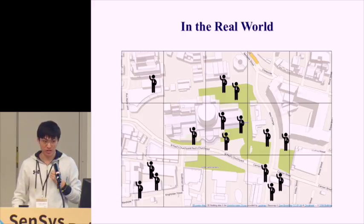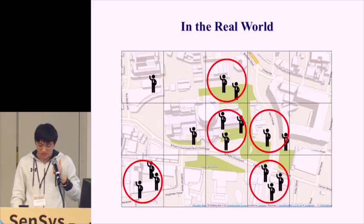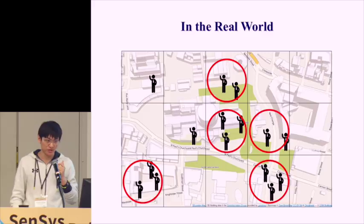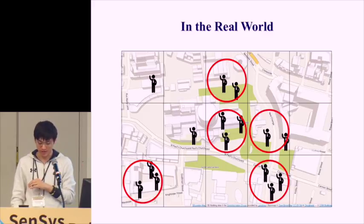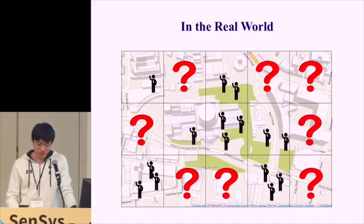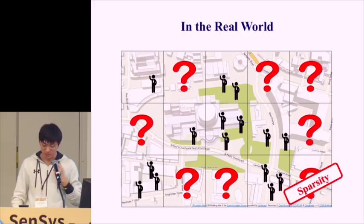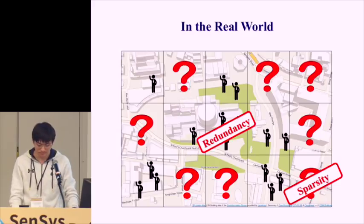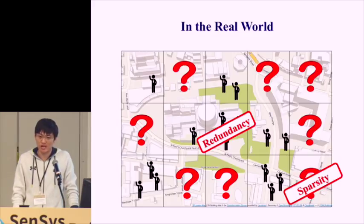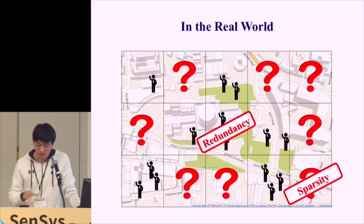We can clearly identify two challenges. First, in areas marked with red circles, multiple users are observing the same entities — we call this the redundancy challenge. Second, for locations marked with question marks, there are no user observations at all, and deriving knowledge for these entities is the sparsity challenge. These two challenges are so general that they can appear in any real-world crowd sensing application.